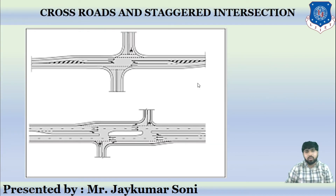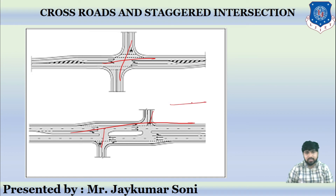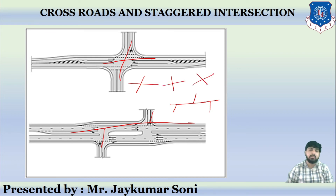Next come crossroad and staggered intersections. A crossroad looks like a standard four-way cross. A staggered intersection is offset — the roads do not meet at a single point. These are the two forms of these intersection types.